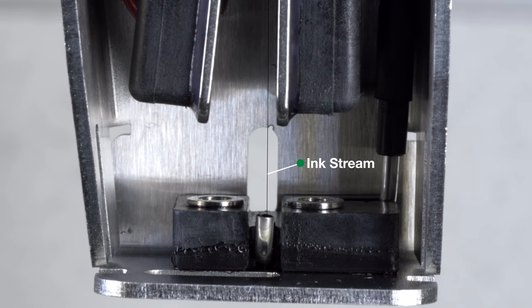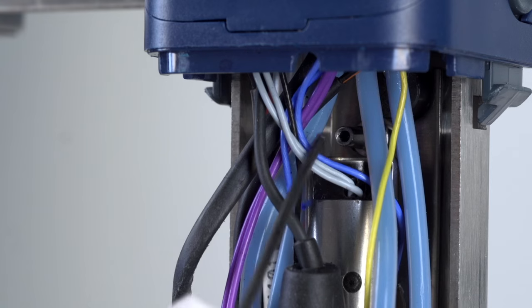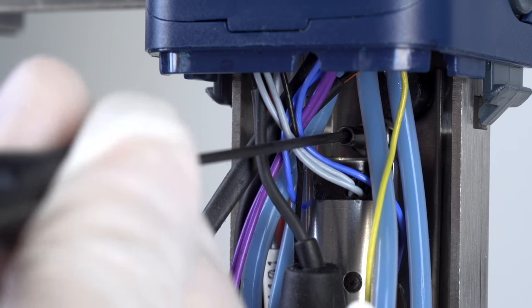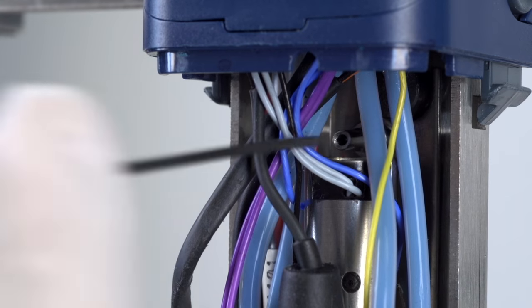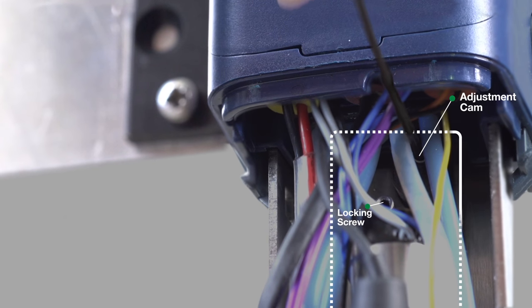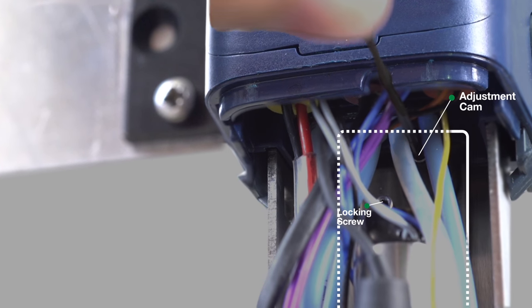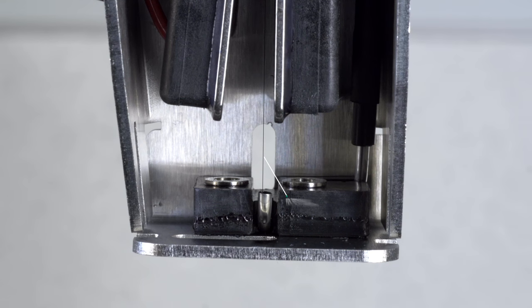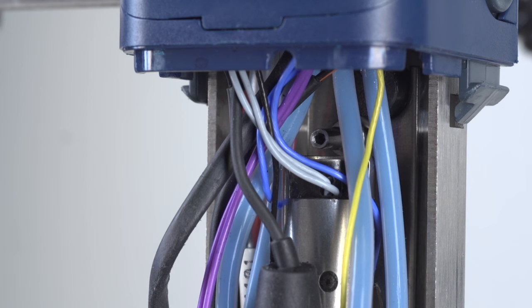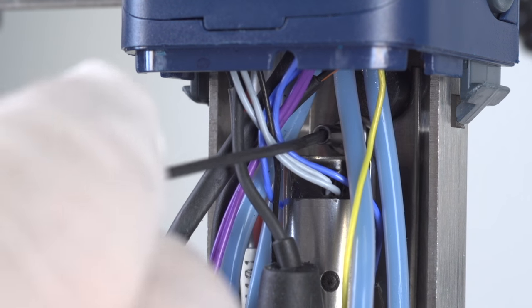To adjust the ink stream horizontally, left to right, you need to ensure that the locking screw is loose. Then, turn the adjustment cam until the ink stream is 75% to the left of the gutter as shown. Once aligned, tighten and lock the locking screw in place.